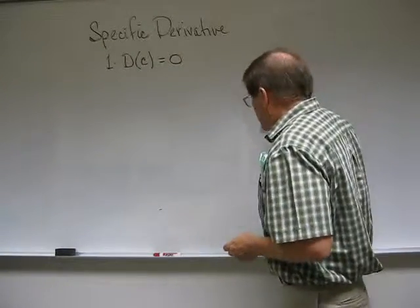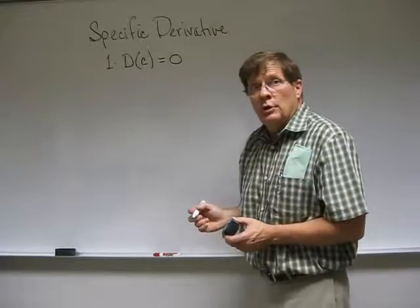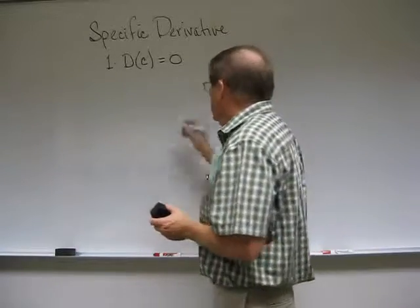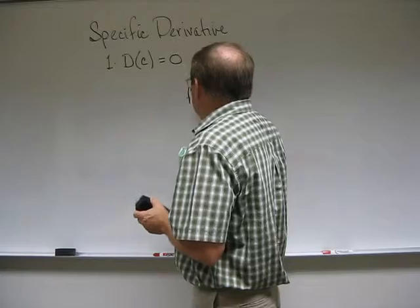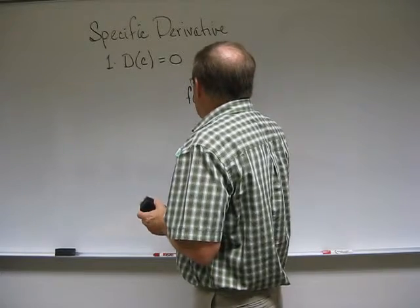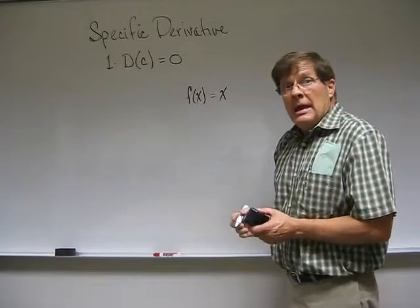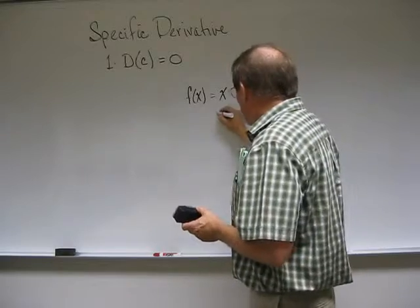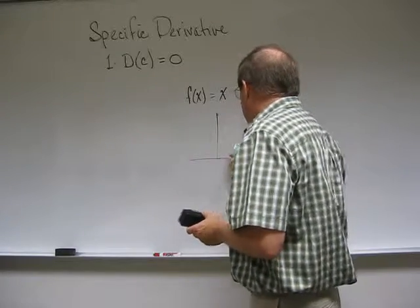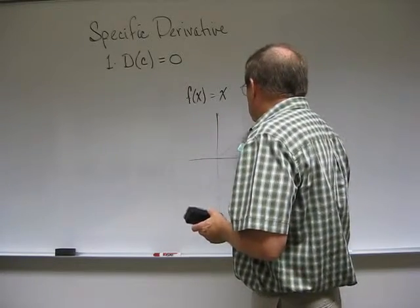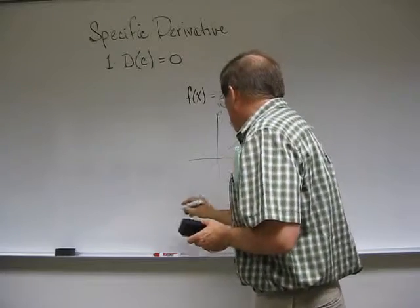There are 5 specific rules, 6 specific rules that we're going to look at. There's the first. The second one examines the function f of x is equal to x. Now again, look at what that graph looks like.